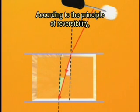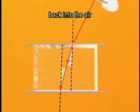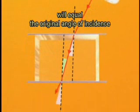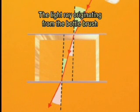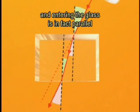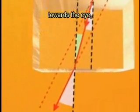According to the principle of reversibility, it means that the angle of refraction back into the air will equal the original angle of incidence from the air. The light ray originating from the bottle brush and entering the glass is in fact parallel to the light ray leaving the glass towards the eye.